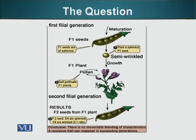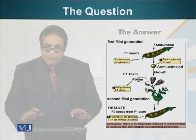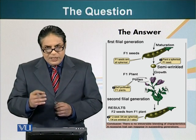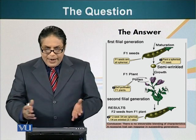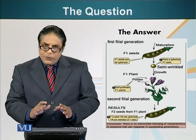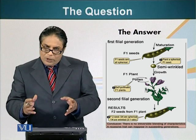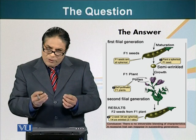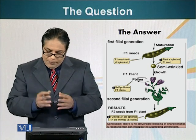Now, if the blending concept was correct, all these seeds would be semi-wrinkled and semi-spherical. It was as though the wrinkled seed trait had completely disappeared, because none of the F1 generation plants — which stands for first filial generation — had any wrinkled seeds. Here we could see that the blending theory was incorrect, because the blending theory would have predicted that offspring would have a mixture of characteristics from both parents.